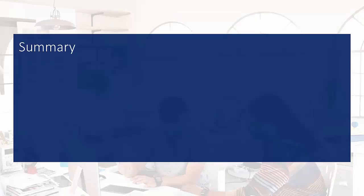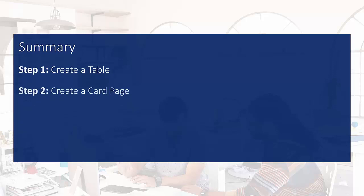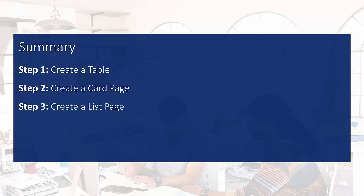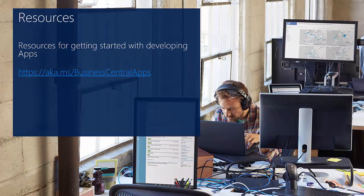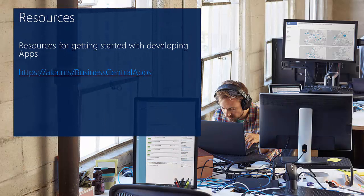Now, let's summarize what we did. First thing we did was we created a table. Then, we created a card page. And we created a list page. Made sure the card page was named on the list page. Last but not least, we made the list page searchable, so we can find it after we have installed the extension or app. If you want to know more about how to create apps for Dynamics 365 Business Central, you can go to aka.ms/businesscentralapps for more information. I hope you enjoyed the video, and I hope to see you back another time.